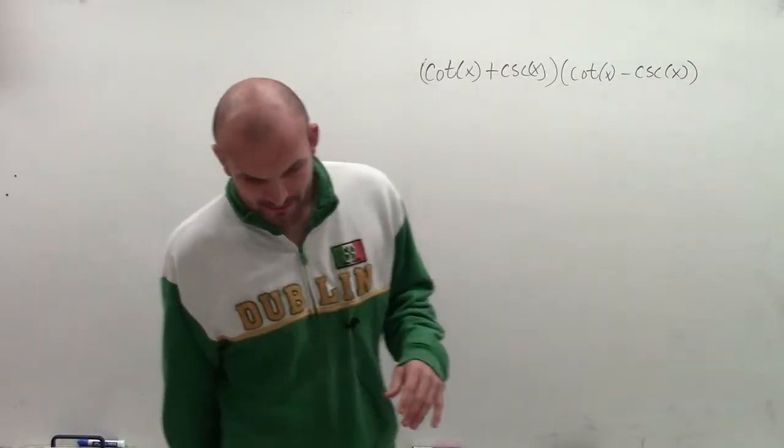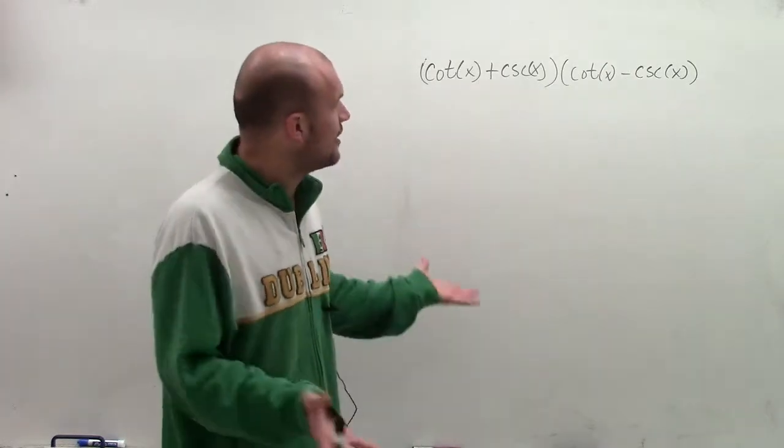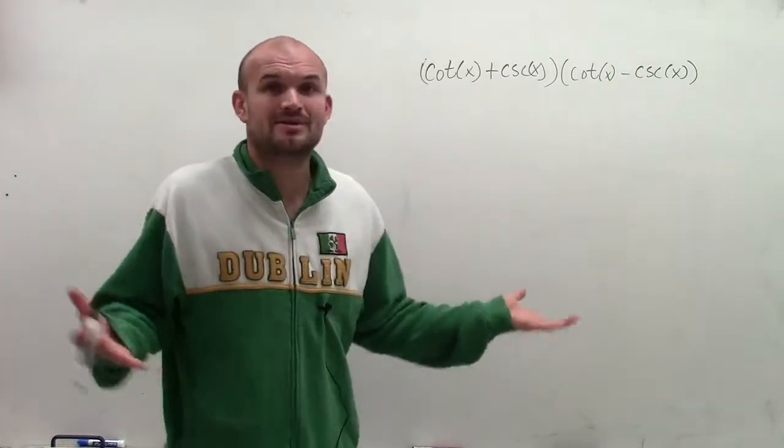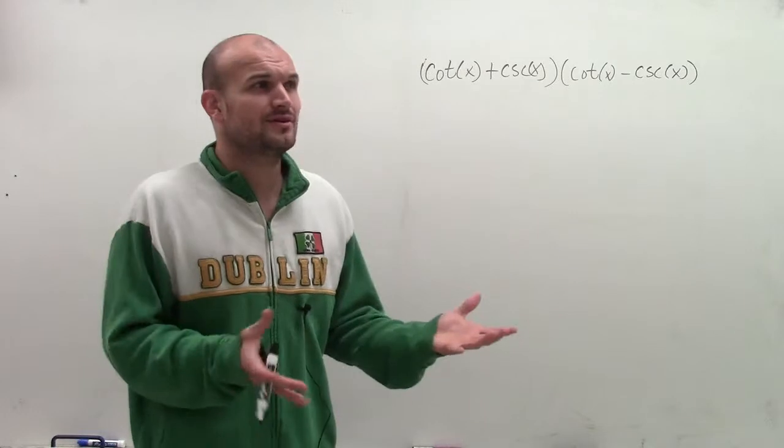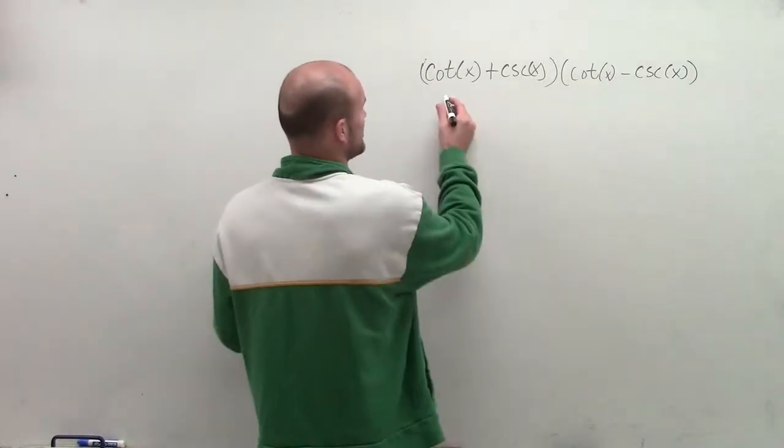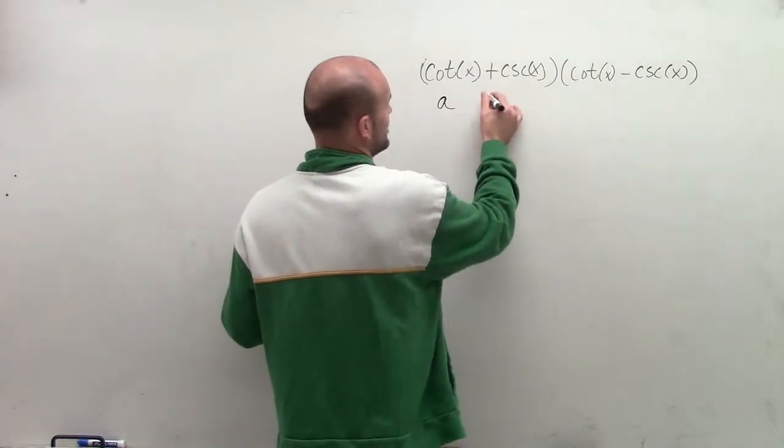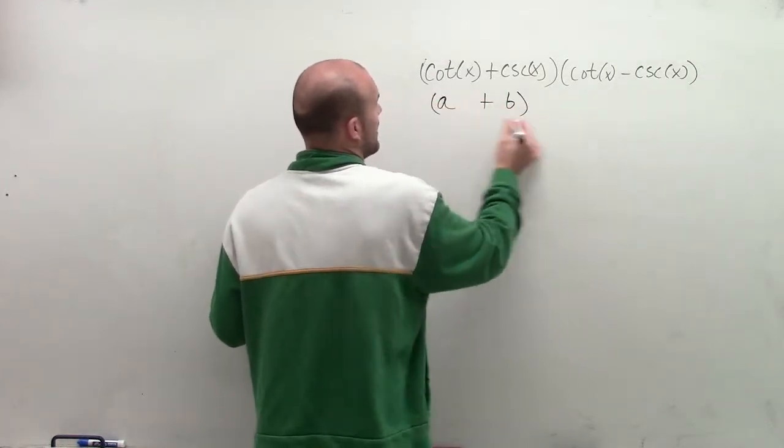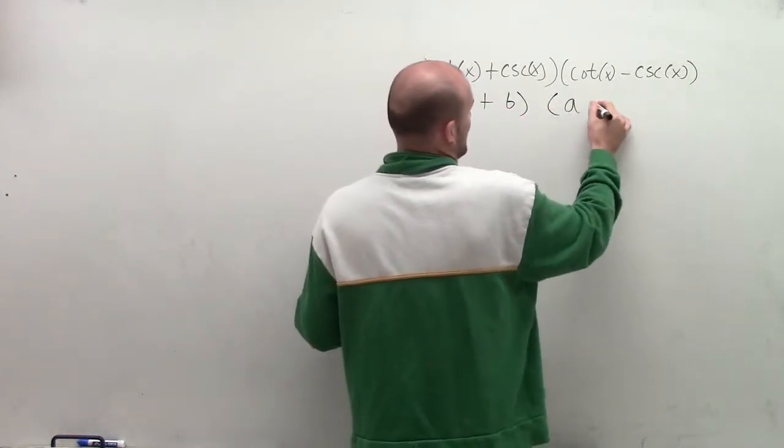So when looking at a problem like this, I see that I have a binomial times a binomial, which I know it's in trig, but let's just go and kind of replace that and see how I'd solve it otherwise. Let's kind of pretend that cotangent would be A and cosecant could be B, and then multiply by A minus B.